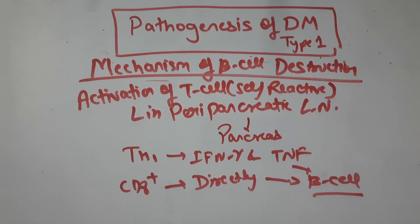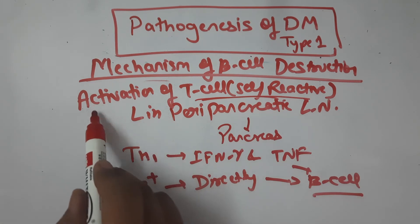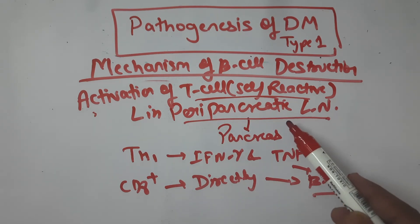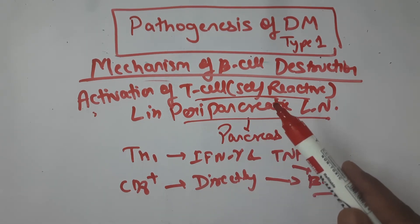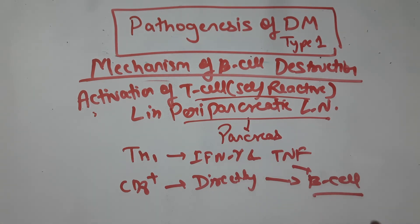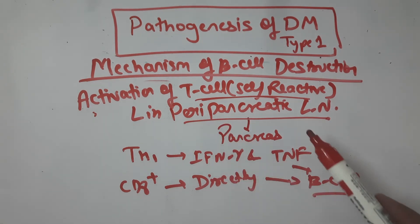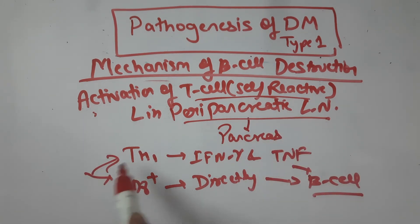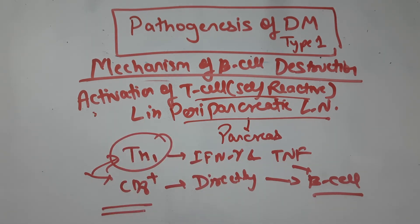Initially, self-reactive T cells are activated in the peripancreatic lymph nodes, triggered by antigen released from damaged islet cells due to infection. These cells then migrate to the pancreas. In the pancreas, two important cell types act: TH1 cells produce interferon-gamma and TNF, which cause injury to the beta cells, while CD8-positive cytotoxic T cells directly injure the beta cells.